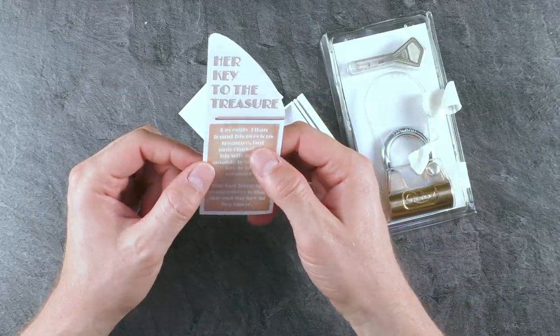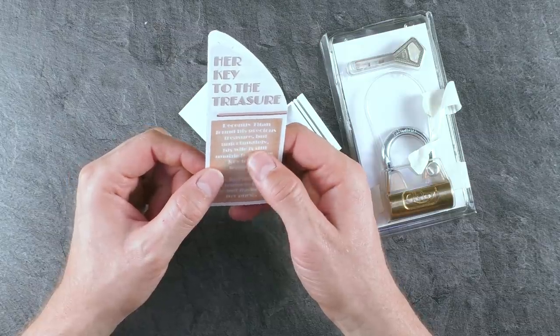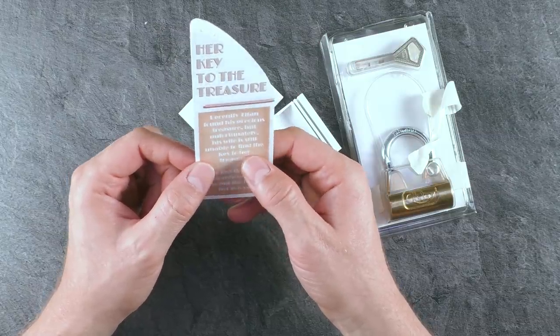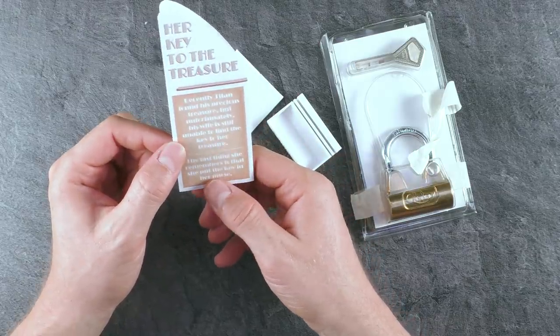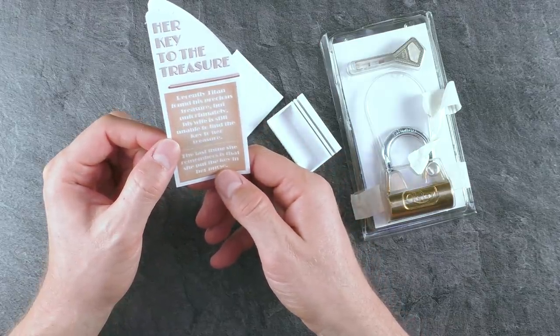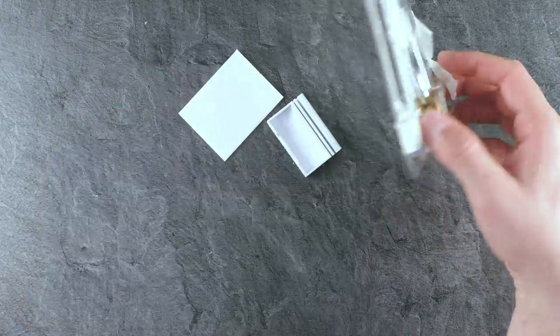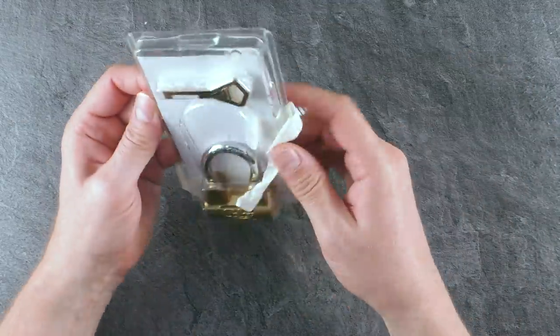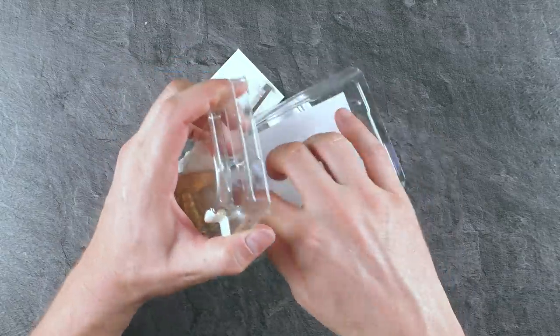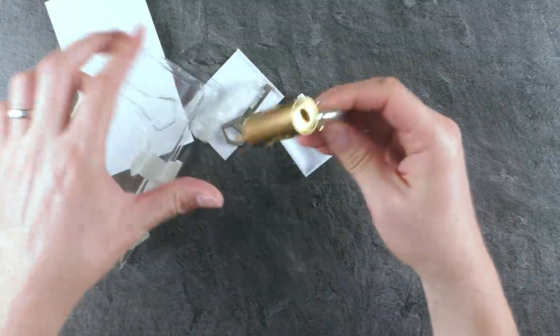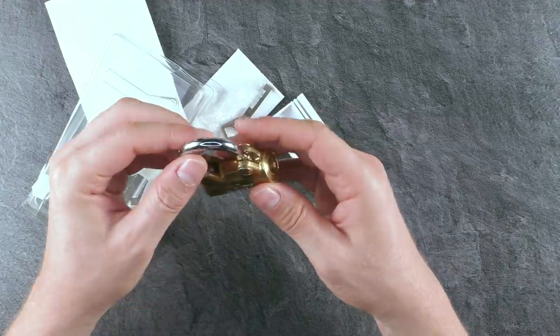Recently Titan found his precious treasures but unfortunately his wife is still unable to find the key to her treasure. The last thing she remembers is that she put the key in her purse. We will find out I guess. Let me just get it out of the box. Key out, padlock out.